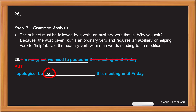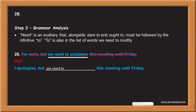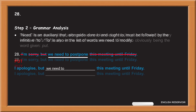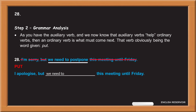The subject must be followed by a verb — an auxiliary verb. That is why we ask, because the word given 'put' is an ordinary verb and requires an auxiliary or helping verb. Use the auxiliary verb from the words needing to be modified. 'Need' is an auxiliary that, alongside 'dare to' and 'ought to', must be followed by the infinitive 'to'. 'To' is also in the list of words to modify. Since auxiliary verbs help ordinary verbs, an ordinary verb is what must come next — that verb obviously being the word given: put.